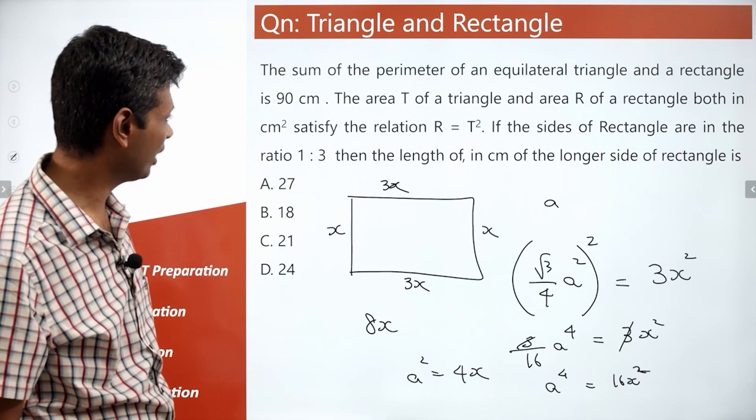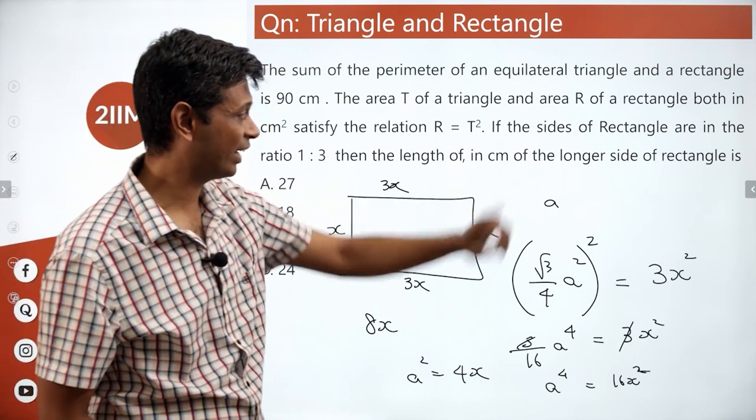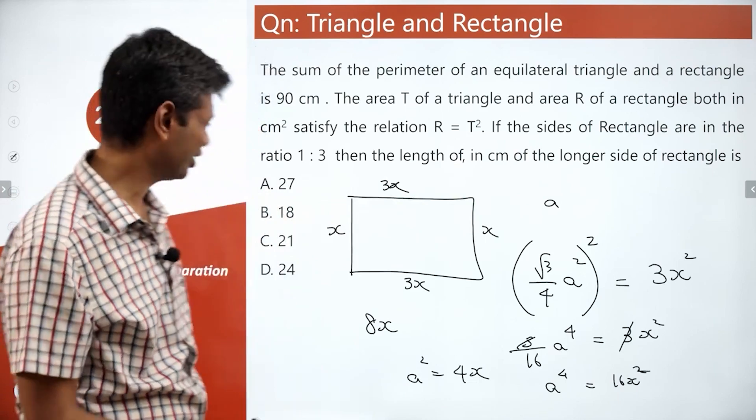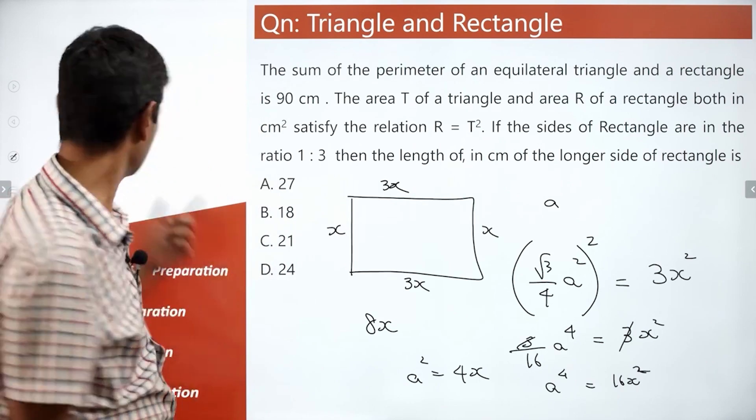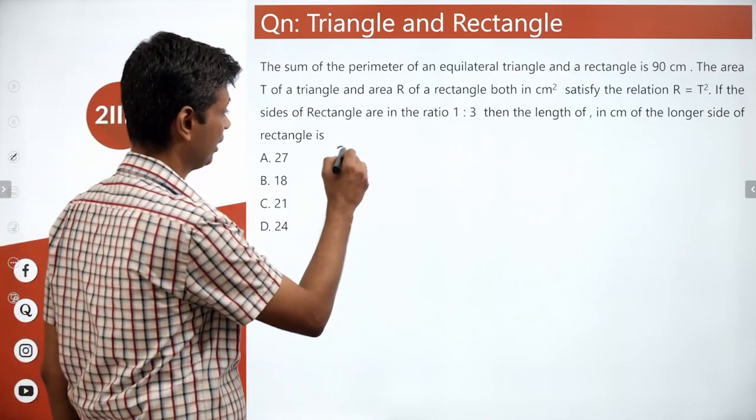Now, we can go on and say that the longer side of the rectangle, that's what we need to find. After this, we can even go on to trial and error which is what I'm going to do. The longer side of the rectangle is 3x.